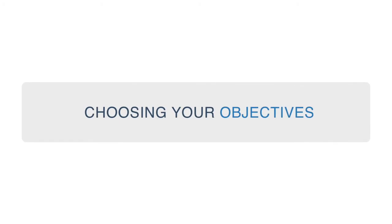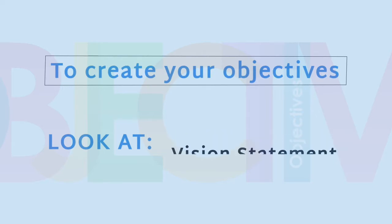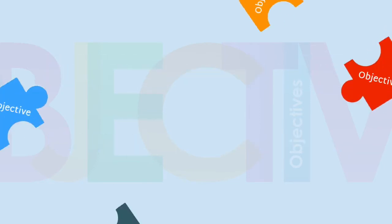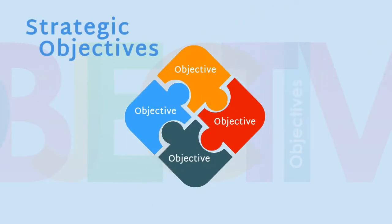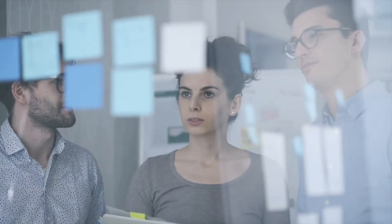When coming up with your objectives, you're going to look closely at your mission statement, your vision statement, and oftentimes your purpose statement. You'll be able to see those important strategic objectives and determine which ones fit correctly with your business. With strategy, it's just as important to determine what objectives you're not going to pursue as it is to determine what objectives you are going to pursue.